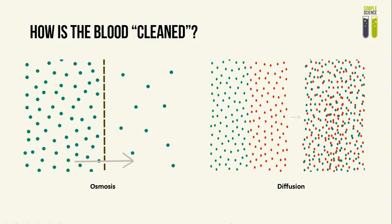I have previously mentioned that the blood is cleaned in the dialysis machine, but how exactly is this done? It is done by osmosis and diffusion. The only difference between these two is that osmosis applies to only water, whereas diffusion applies to any substances such as glucose and urea. Also, osmosis needs to be occurring across a partially permeable membrane, whilst diffusion does not need a partially permeable membrane. But other than that, it is basically the movement of a substance from a region of high concentration to a region of lower concentration.